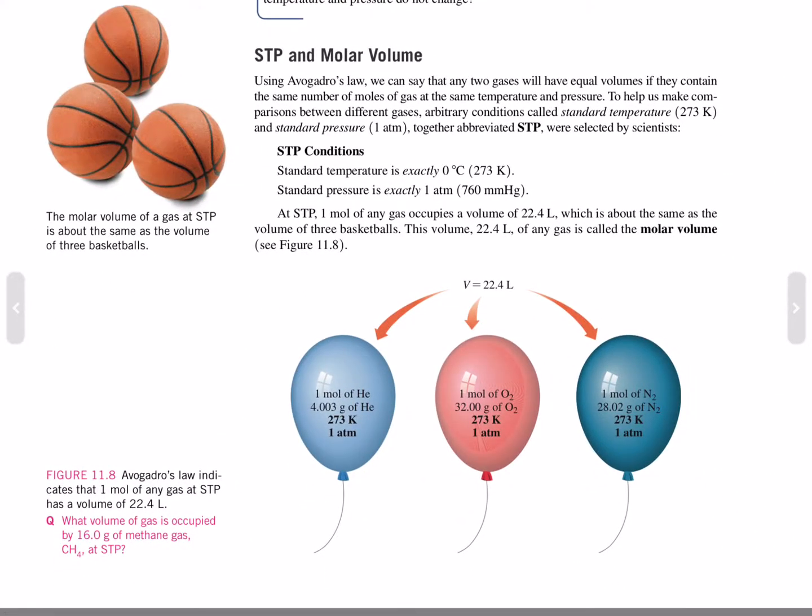STP and molar volume. Using Avogadro's Law, we can say that any two gases will have equal volumes if they contain the same number of moles at the same temperature and pressure. To help us make comparison between different gases, arbitrary conditions called standard temperature, which is 273 degrees Kelvin, and standard pressure, 1 atmosphere, together abbreviated STP, was selected by scientists.